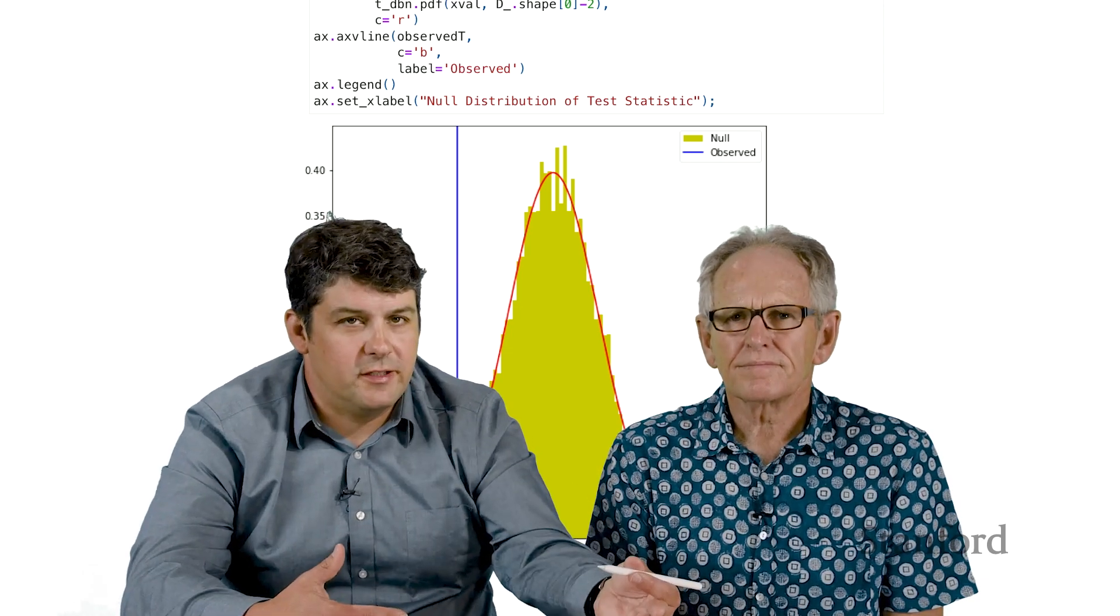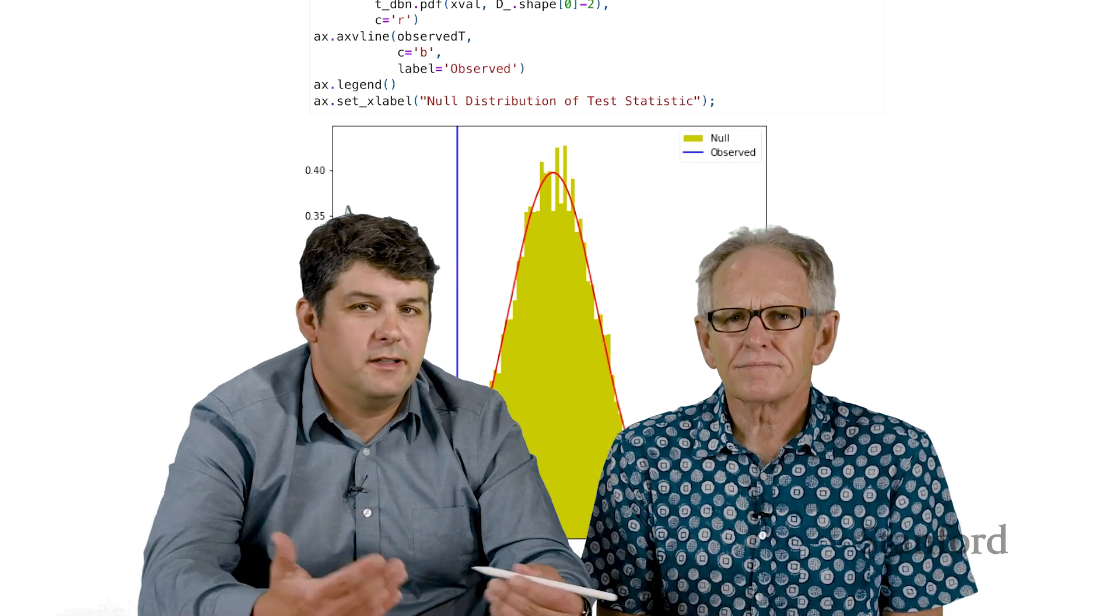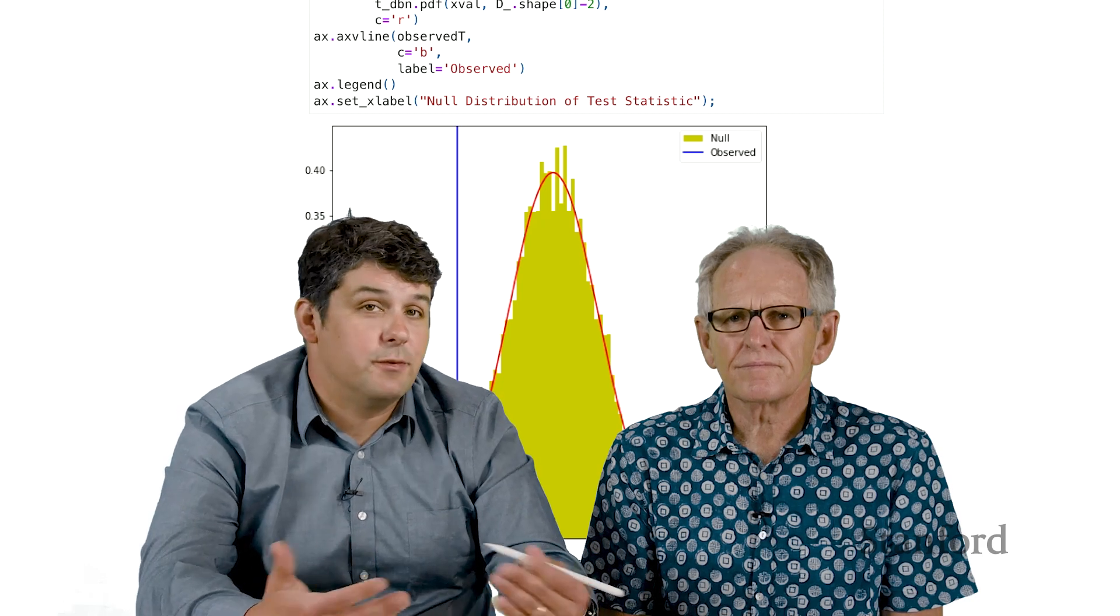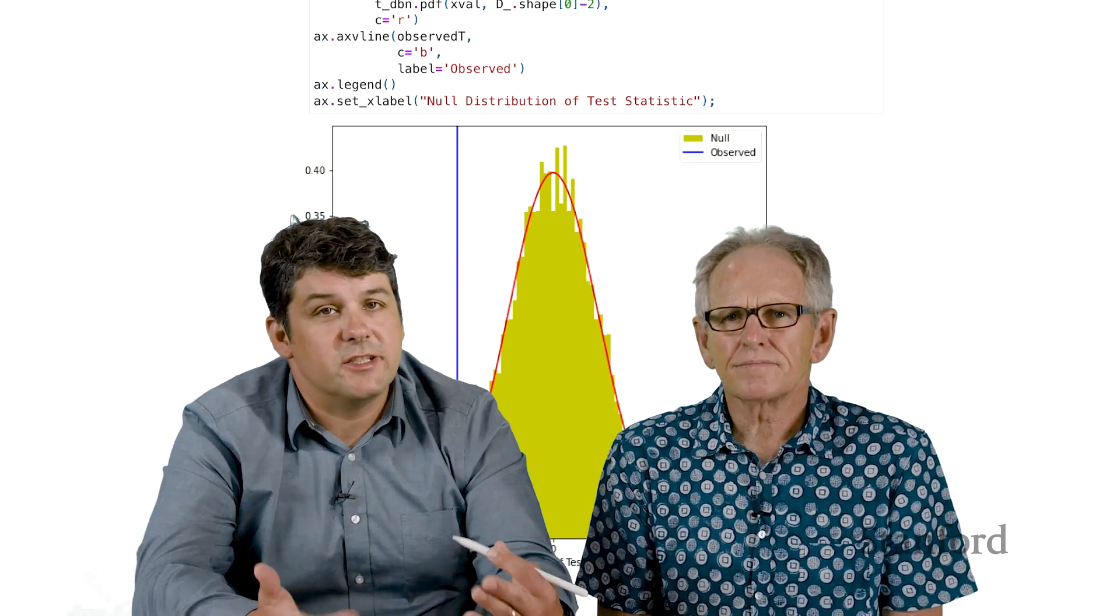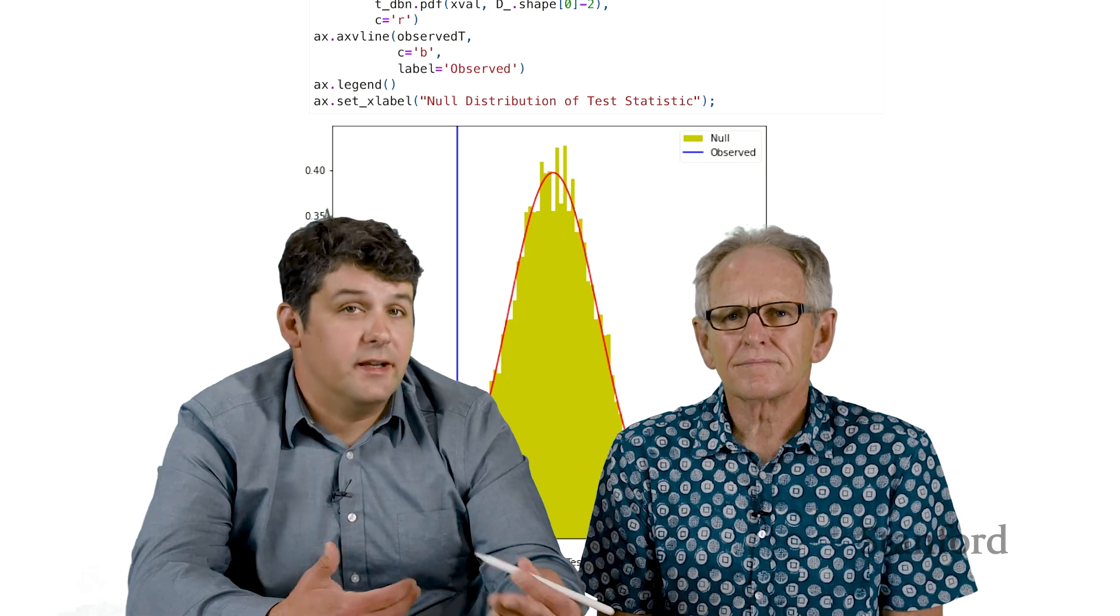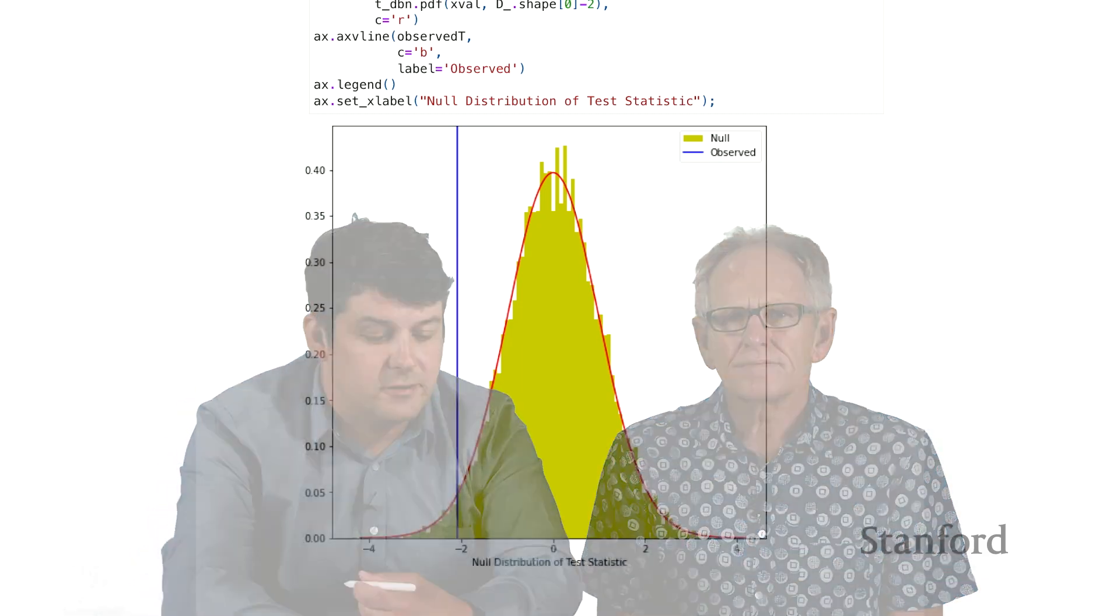We could apply Bonferroni to these p-values, or we could apply Holmes procedure, or we could apply our Benjamini-Hochberg procedures. This is really just a different way to get a p-value that we can later use for the multiple comparisons.